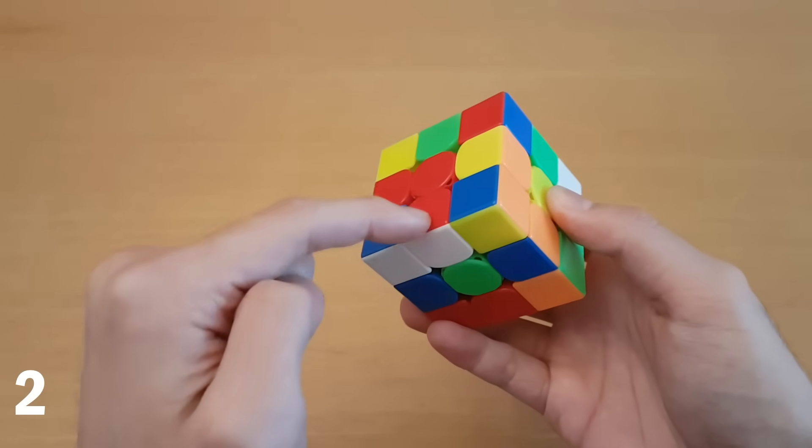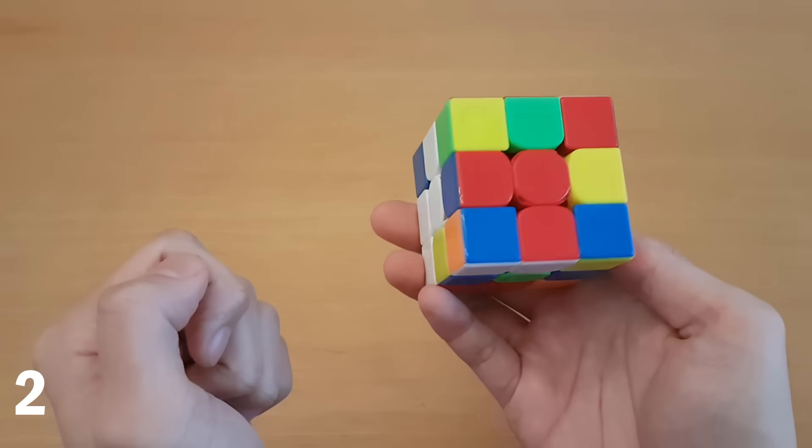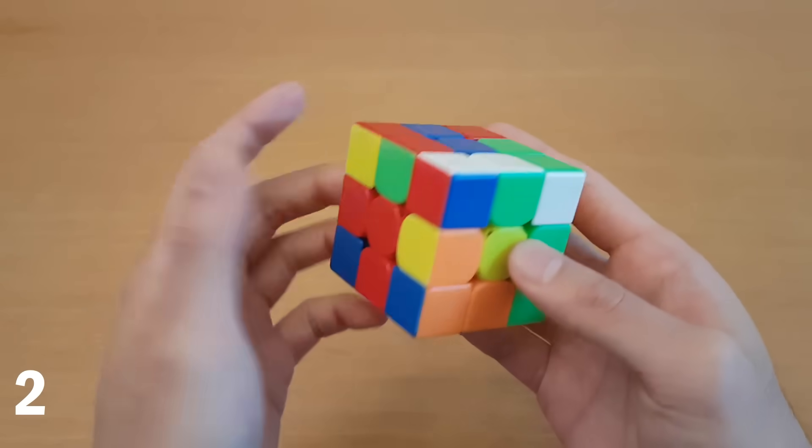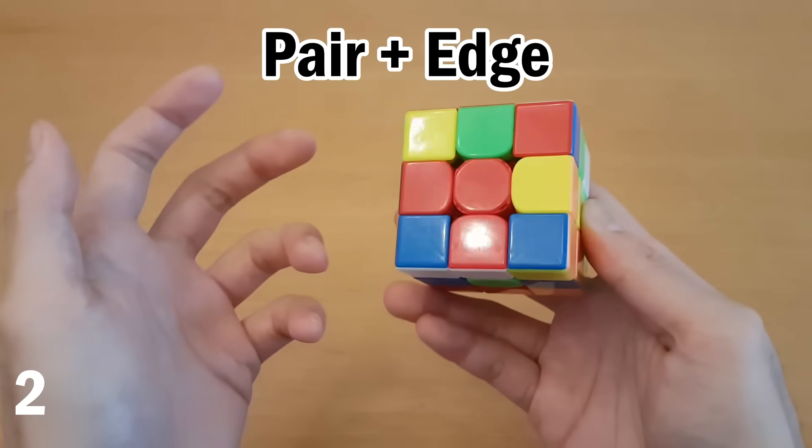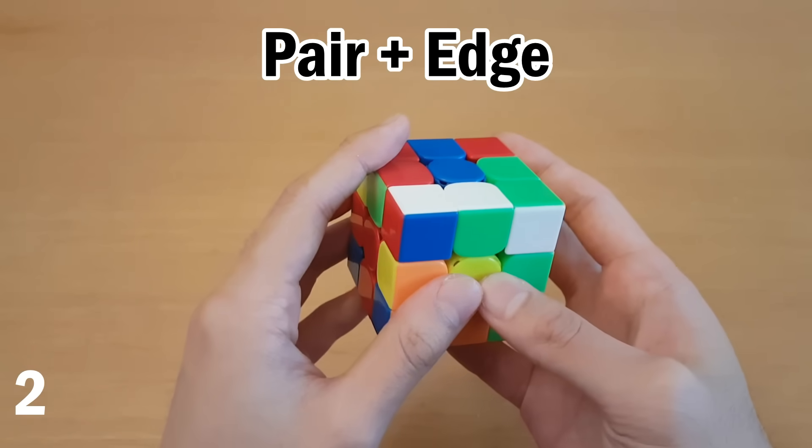So what I did was, for example, put a cross edge here, and then solve this and this. And so that would make a square, but instead, often you can find a way to make a pair and find the edge and just put them all together at once.